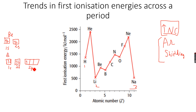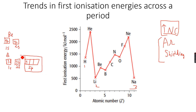The outermost electron in beryllium is in the 2s subshell, however the outermost electron in boron is in the 2p subshell. The 2p subshell is further from the nucleus than the 2s subshell because it has more energy. Therefore we need less energy to remove an electron from the 2p subshell, making it easier to remove an electron from boron than from beryllium.